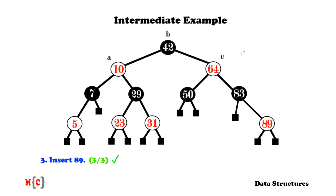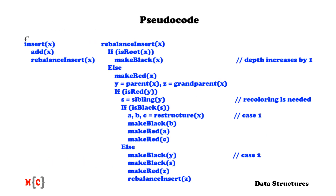By now you're masters of the insertion operation, so let's move on to the pseudocode. The insert function adds x to the subtree and then performs a rebalancing operation. During rebalancing we first check whether x is the root — if so, we make it black; else we make it red, based on our initial decision rule. We assign y and z to be the parent and grandparent respectively. If the parent of x is red we do recoloring: we assign s as the sibling of y. If s is black we are in case one — we do restructuring, outputting a, b, c, then make b black and a and c red as children of b. If s is red, we make y and s black and z red, then make a recursive call for z.